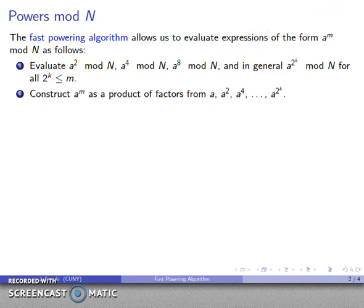And then what I can do is I can construct a to the m as a product of factors of this form. And then I'll multiply these and reduce mod n. Now one of the reasons that this is useful is that these successive powers of a are formed by taking one of these and squaring. And every time we square a number we double the exponent so our exponents are all going to be powers of 2.